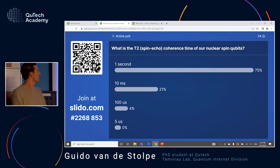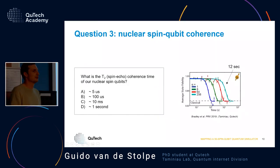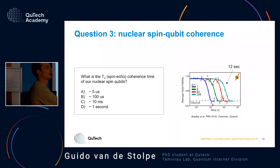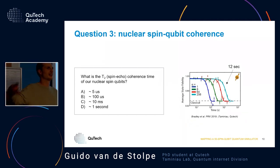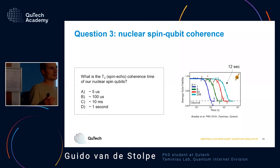If we do this spin echo trick on our nuclear spin qubits, we actually see coherence times of one second. If we add more refocusing pulses we can extend it even further, up to 12 seconds — so by the time I finish presenting a slide, that spin will still be coherent. This is very impressive, and from that point of view this is quite a cool system for quantum simulation: we have rudimentary control, readout, initialization, and really good coherence.